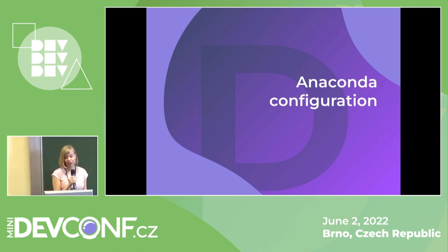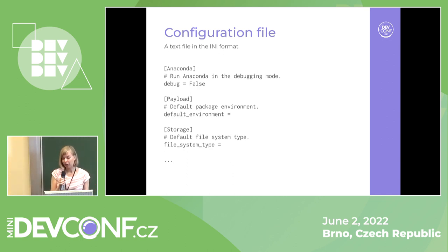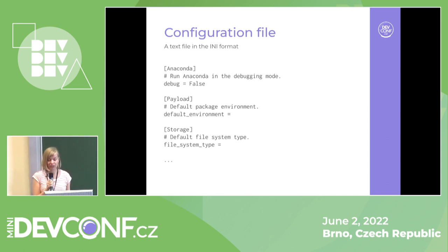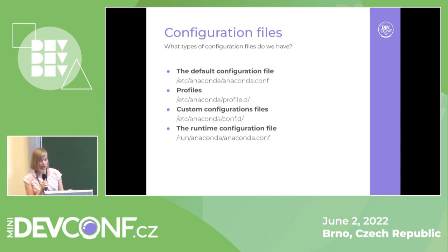So how are these things actually configured? We use something we call Anaconda configuration files — not very surprising. It's just a very simple file in the .ini format with some sections, options, and comments. Even though it's not surprising, we didn't have anything like this until a few years ago, and it was very painful. The customizations are not new — what's new is how you can do them and how the code works with them. We use the same format, but in four different ways, so we have four types of configuration files.